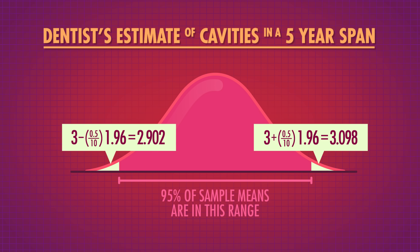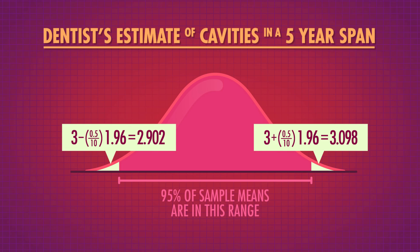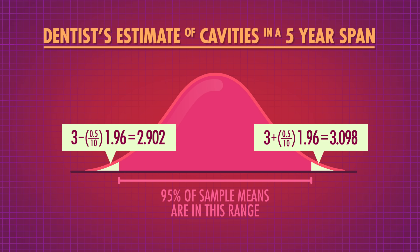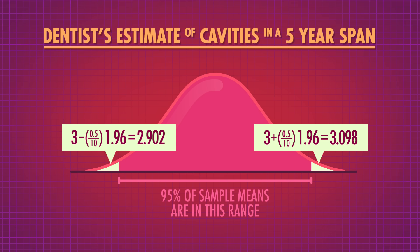Giving a range of numbers instead of just an estimate for the mean better represents the fact that there's some uncertainty and variation when we estimate population parameters like the mean, proportion, or regression slope from a sample.